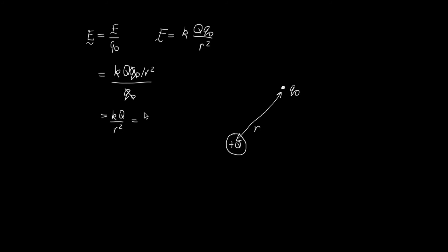So we can write this as KQ on R squared, or if we don't like K, we can write this one over four pi epsilon naught Q on R squared. And that's an expression for the magnitude of the electric field around a charged particle. Now we need to remember it is a vector, so it's always directed away from a positive charge and towards a negative charge.